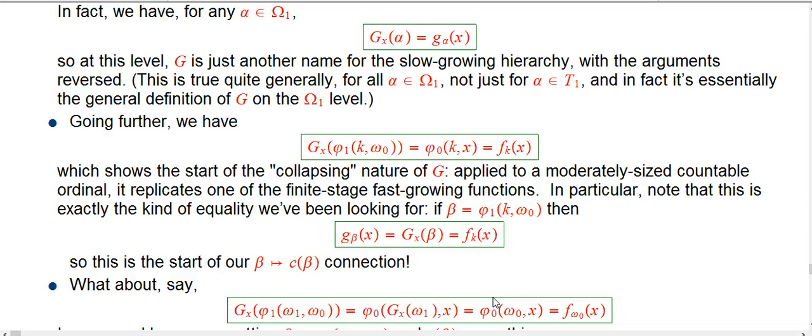And what we've discovered is that the slow growing hierarchy using that moderately interesting beta applied to x. We're now rethinking of that. We're sort of reinterpreting that as what happens when you collapse that beta one stage back to an ordinary number using helper argument x.